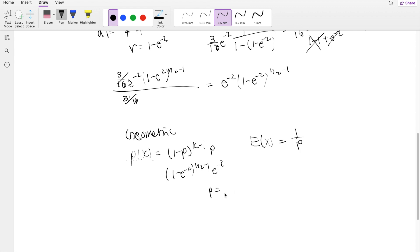So in our question, p takes the value of e to the negative 2, so the expectation of this, then it would just be equal to 1 over e to the negative 2, which is just equal to e to the 2.